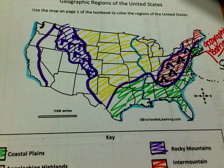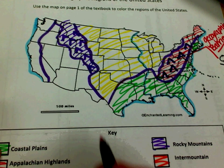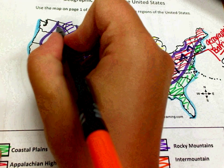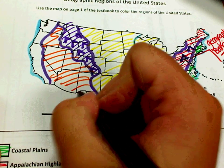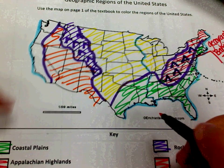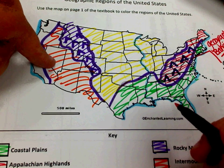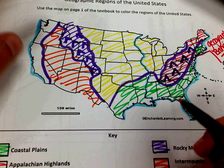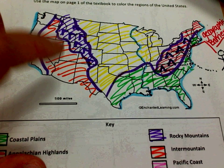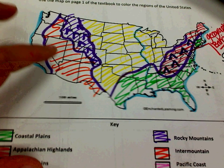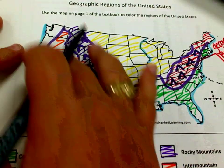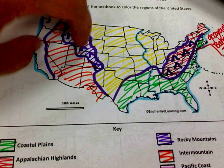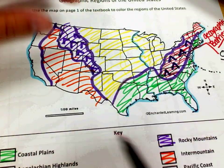Over here, this next section we're talking about is Intermountain. This area right here is a lot of desert. If you think about Nevada — pretty much aside from Las Vegas, it is dry, dull desert. Arizona I always think of as just red dirt — it is almost all desert and canyons, like the Grand Canyon in Arizona.